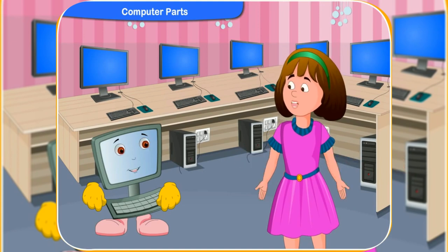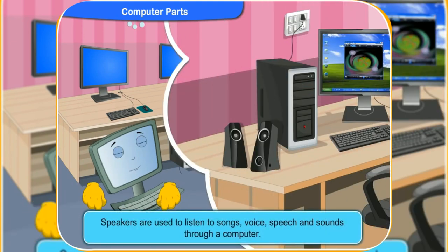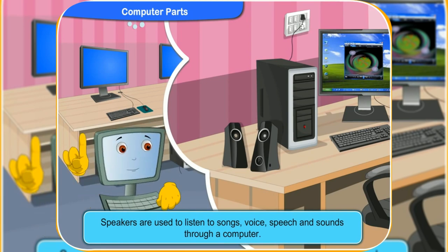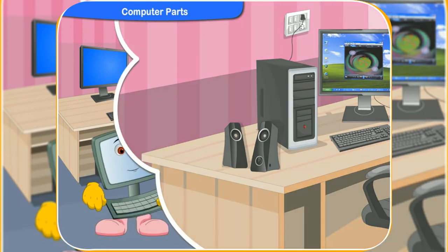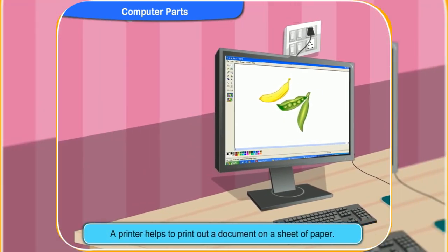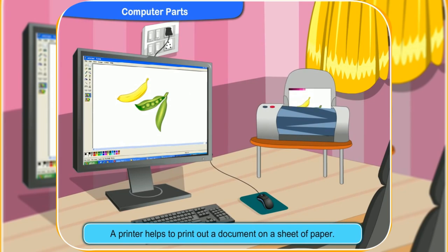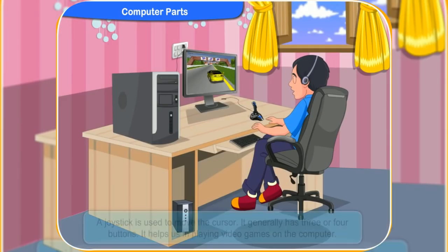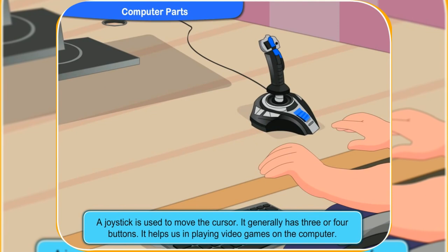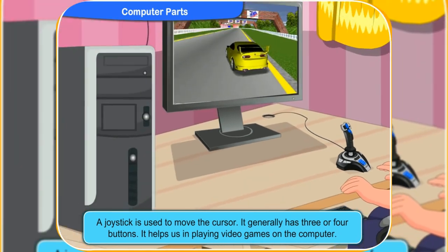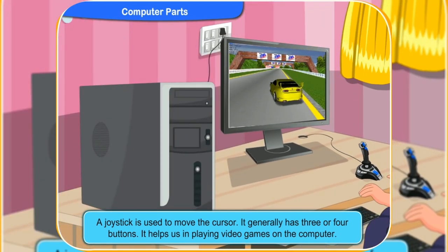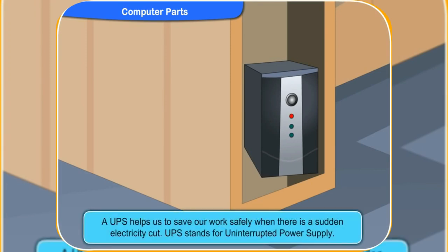Tell me more about them. Speakers are used to listen to songs, voice, speech and sounds through a computer. A printer helps to print out documents on a sheet of paper. A joystick is used to move the cursor. It generally has three or four buttons and helps us in playing video games on the computer. A UPS helps us to save our work safely when there is a sudden electricity cut. UPS stands for Uninterrupted Power Supply.